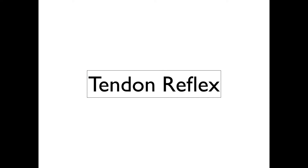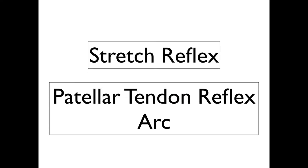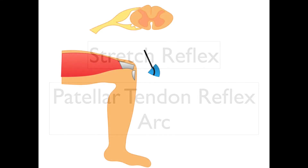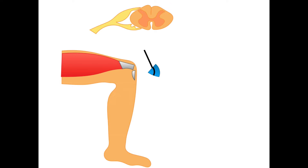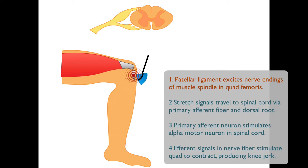The first example of a reflex arc we'll look at is the patellar tendon reflex arc. You've experienced this during a doctor checkup — you sit on the table, the doctor lightly taps your patellar tendon with a hammer, and that initiates a signal that shoots up the leg. That signal excites the nerve endings, travels up the afferent fiber, and enters the spinal cord through the dorsal root — the posterior horn.